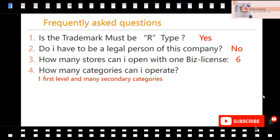Here are some frequently asked questions. For example: must the trademark be R-type? Yes — if you want to add your trademark onto AliExpress, it must be R-type. Do I have to be the legal person of this company? No — you just need the business license or the authorization of the business license to open your store. How many stores can I open with one business license? The answer is six — with one company and one business license, you can open six different stores on AliExpress.